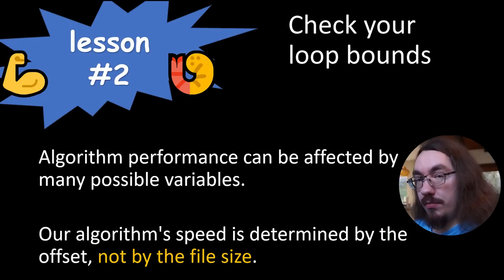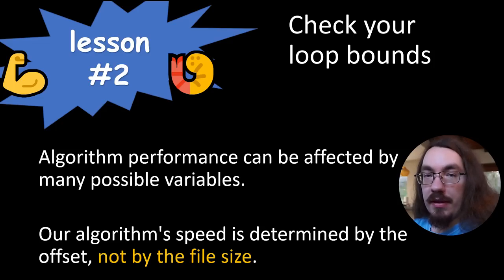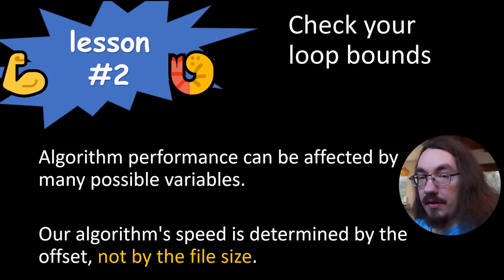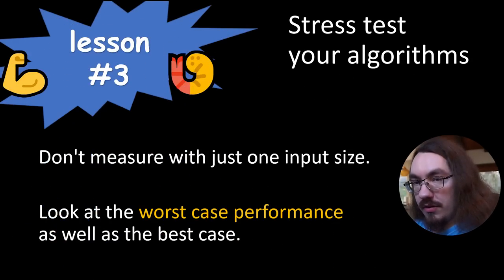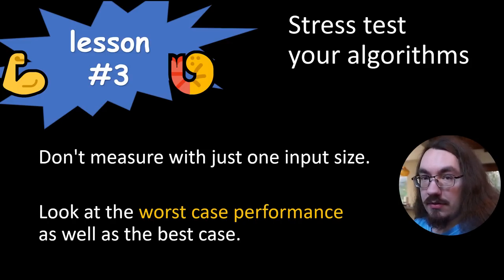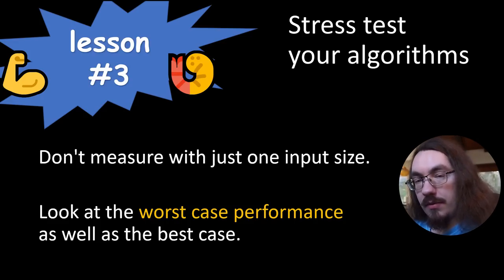Lesson number two is to check your loop bounds. When you're analyzing your algorithm, don't just see 'oh there's a loop.' You have to see what is it looping to — is it looping to the size of the input, or something else? That affects the time complexity. In our case, performance is determined by where the error is in the file, not the total file size. Lesson number three: stress test your algorithms. Don't just feed your algorithm the best possible case. Try random inputs, realistic inputs, and try to break your algorithm with malicious inputs.